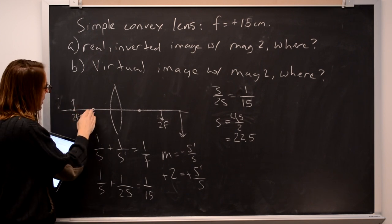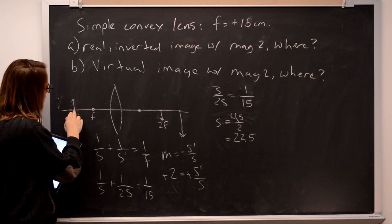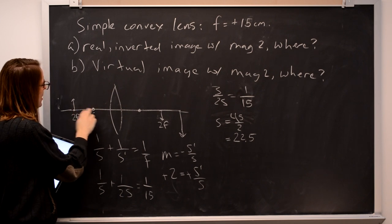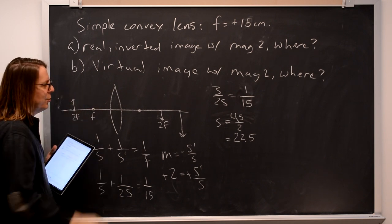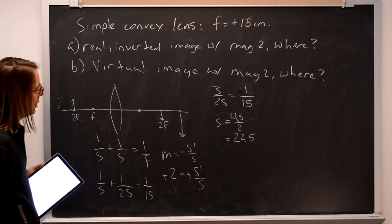22.5 would be the distance. And you can check, does that make sense? Well, according to our discussion here, it should be less than 2f but more than f, somewhere in between. 15 to 30. Yeah, 22.5 is in between. There we go.